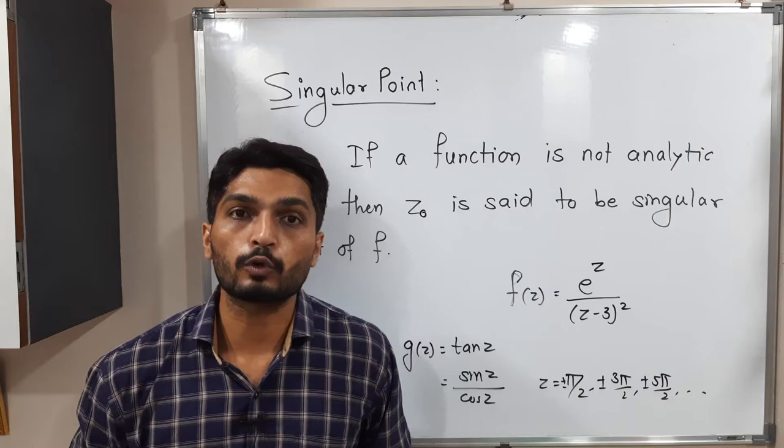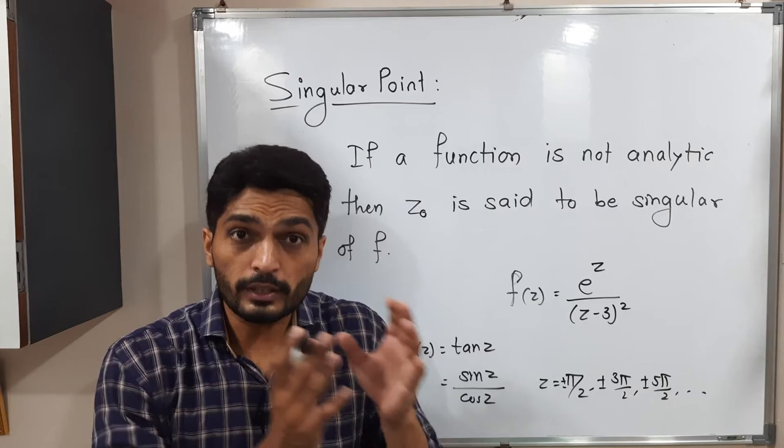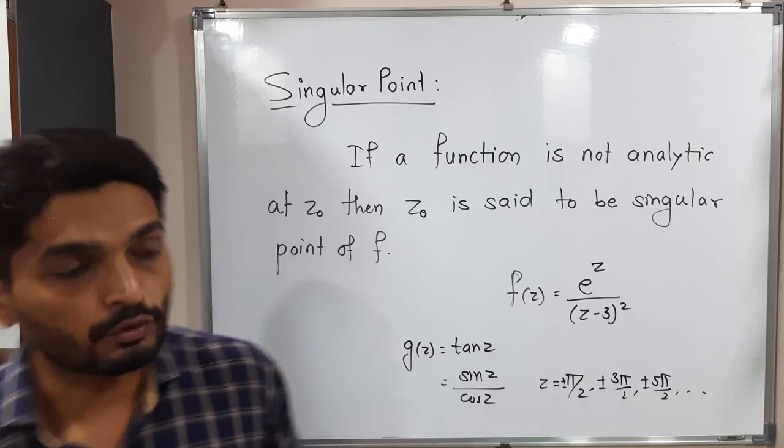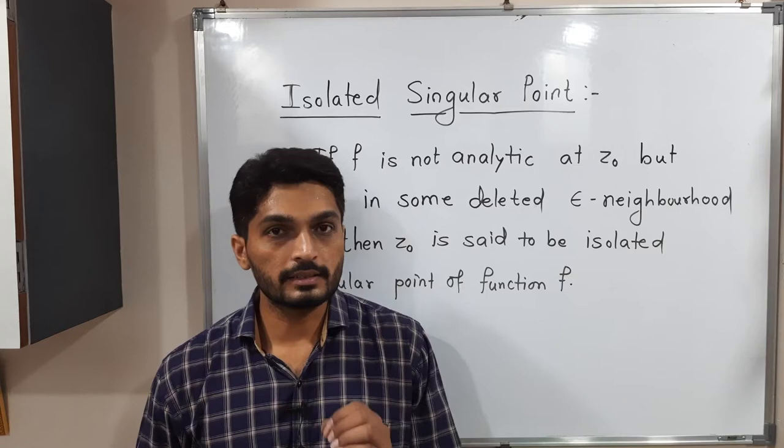There are two types of singular points: isolated singularity and non-isolated singularity. Let us discuss their types. I suggest you take a screenshot before we go further. Let us now discuss the types of isolated singular points.